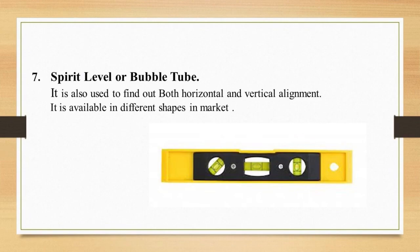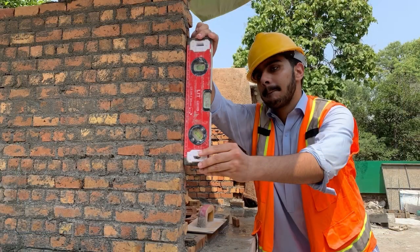The seventh tool is the spirit level, also called a bubble tube. It is used to find both horizontal and vertical alignments. It is available in different shapes and colors in the market. Here you can see one of our colleagues holding the spirit level to find both the vertical and horizontal alignment.